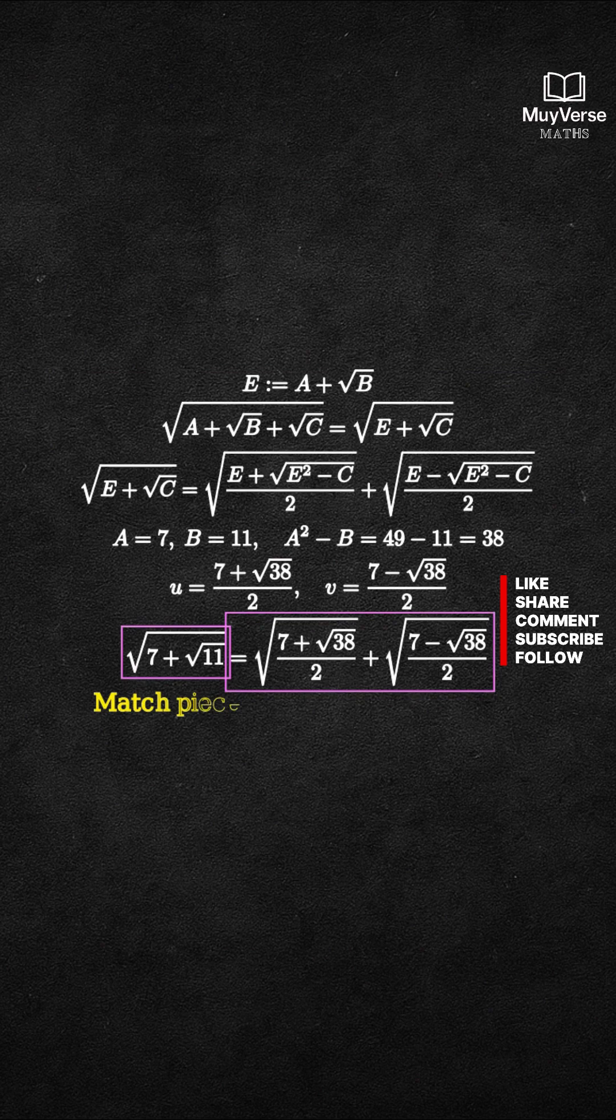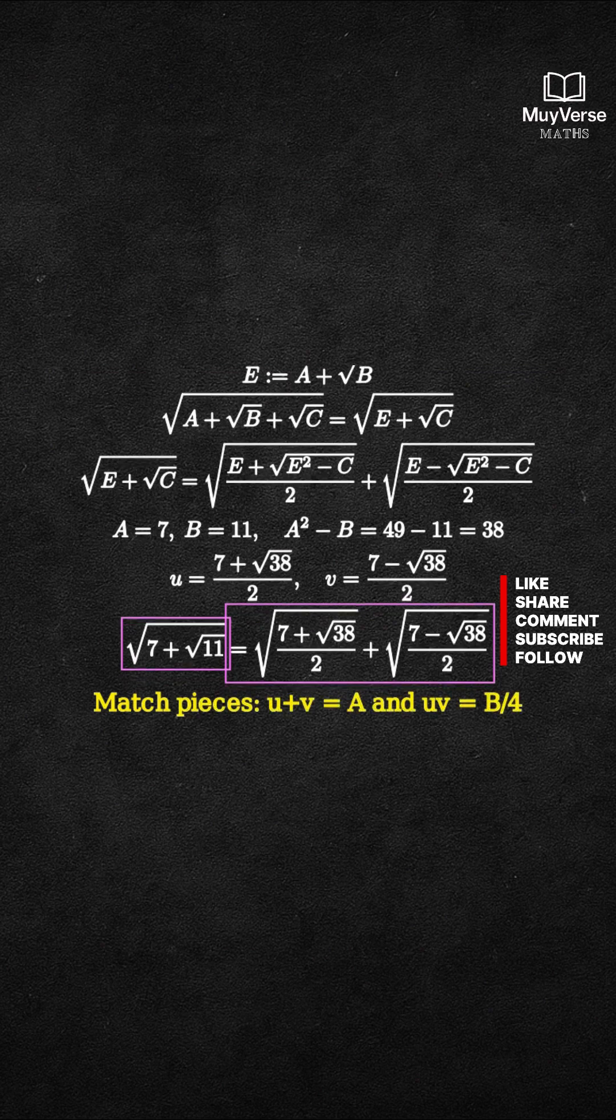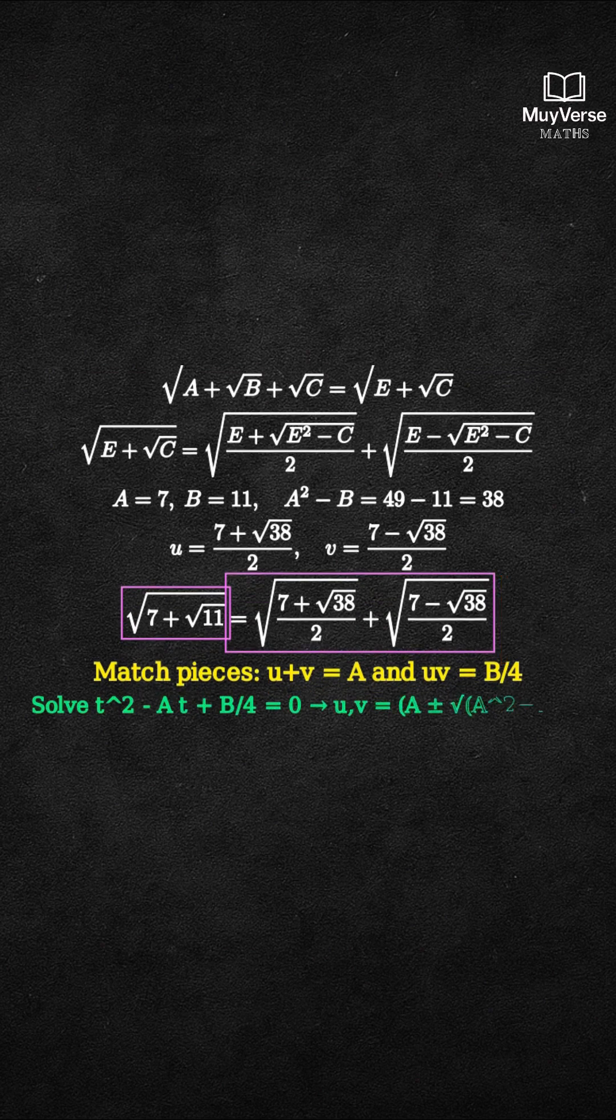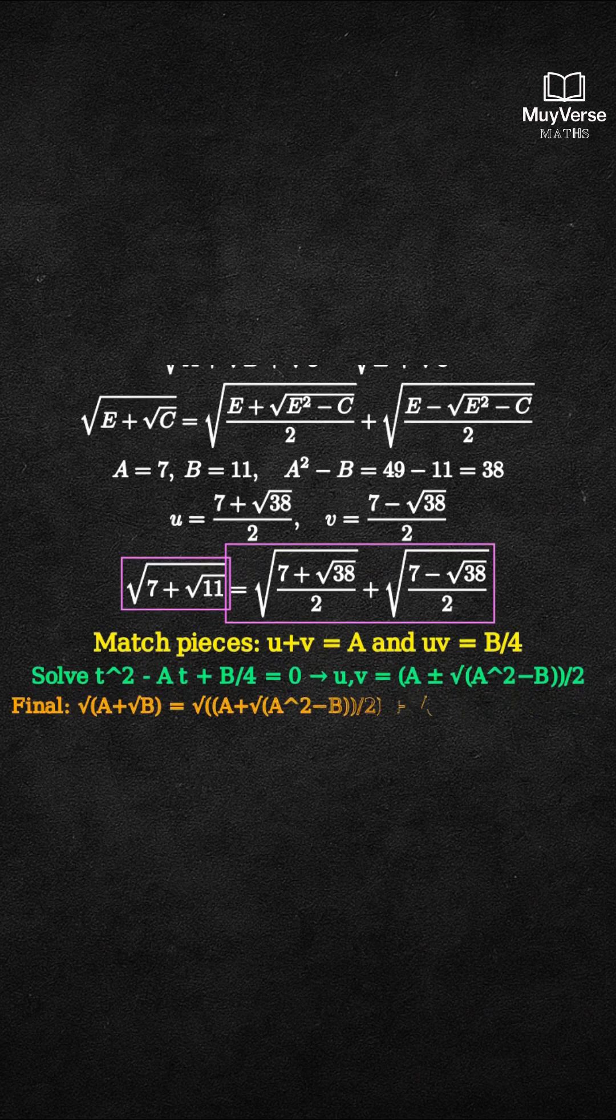Summary. Two equations from squaring and matching give the sum and the product. Solve the quadratic for u and v. Plug back for the one-line split and repeat to peel more radicals.